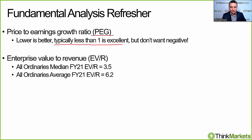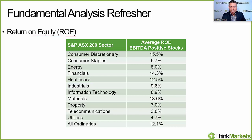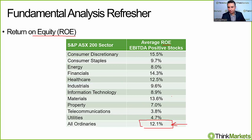The PEG ratio — PE divided by growth rate — less than one is excellent; we don't want a negative number as that would indicate earnings are shrinking. For enterprise value to revenue, the median FY21 for the All Ordinaries index — the top 500 stocks in Australia — is about 3.5 and the average is 6.2. Anything less than that range gets a tick; anything greater is worse than average. We also talked about return on equity and the average ROE figures for EBITDA-positive stocks across various sectors.